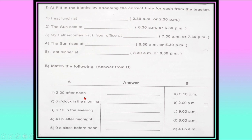2 after noon will be 2 PM. 8 o'clock in the morning will be 8 AM. 6:10 in the evening will be 6:10 PM. 4:05 after midnight will be 4:05 AM. 9 o'clock before noon will be 9 AM.